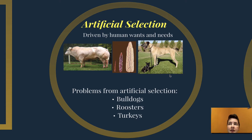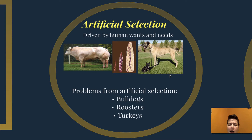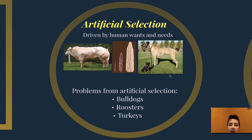Roosters were bred to have such beautiful plumage that their temperament was neglected, resulting in aggressive roosters that would harm and kill hens — not beneficial if you are a chicken farmer. Turkeys bred for Thanksgiving have been selected for such large breasts for breast meat that they are unable to mate themselves, so all commercial turkeys are artificially inseminated.